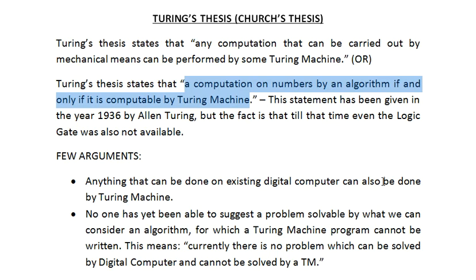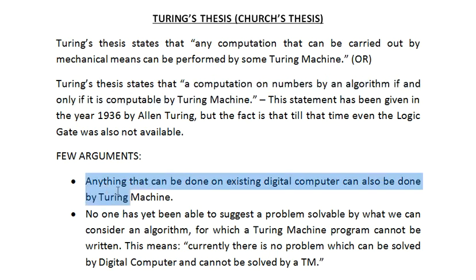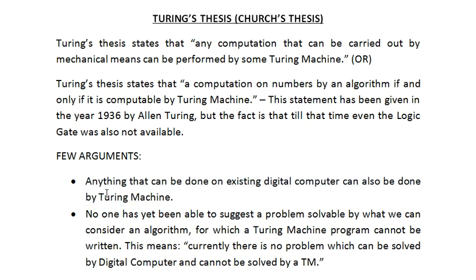A few arguments were provided and succeeded. The first argument states that anything that can be done on an existing digital computer can also be done by a Turing machine. This means you can think of the Turing machine as the basis of all machines, and whatever computations are described in an algorithm defined by a Turing machine are possible to be performed by any digital computer.